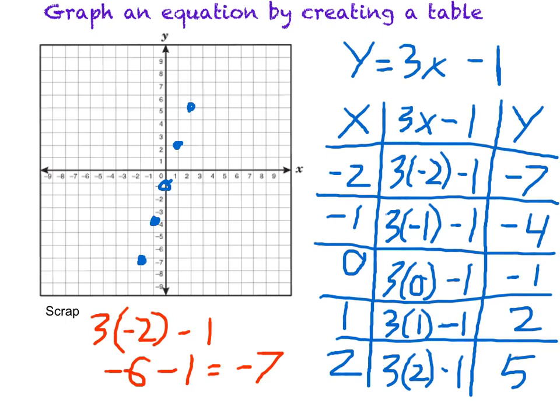So the dots on the graph here represent different solutions to our original equation y equals 3x minus 1. Now, we'll note here that they form basically a straight line, which suggests to us that this is a linear equation.